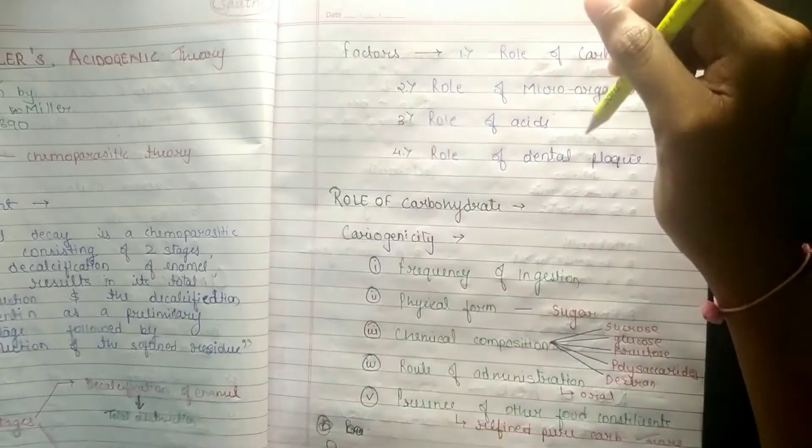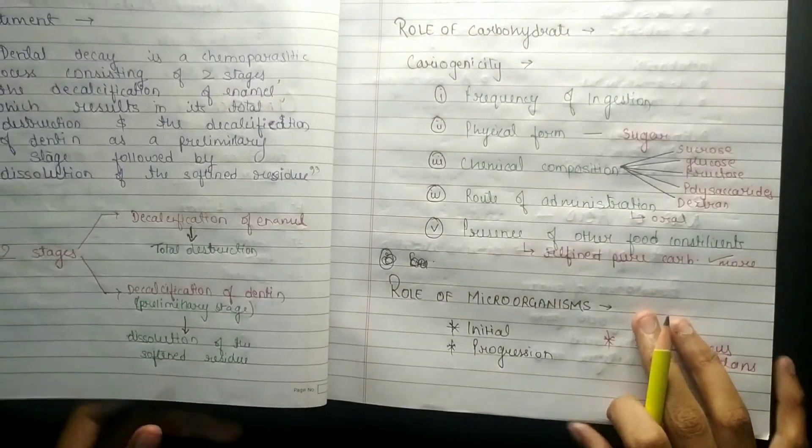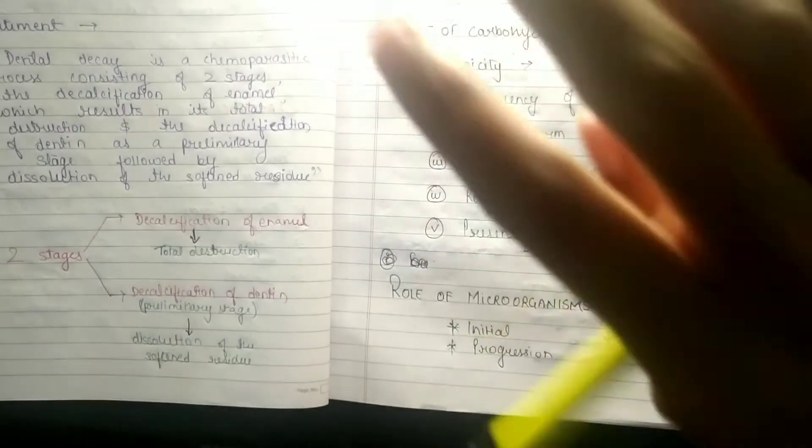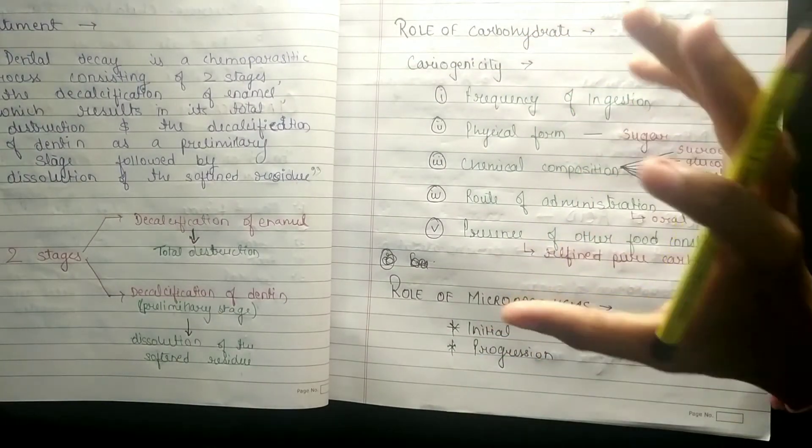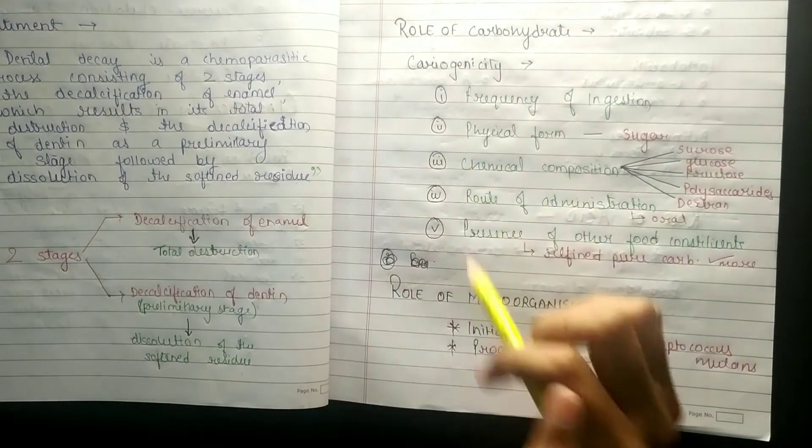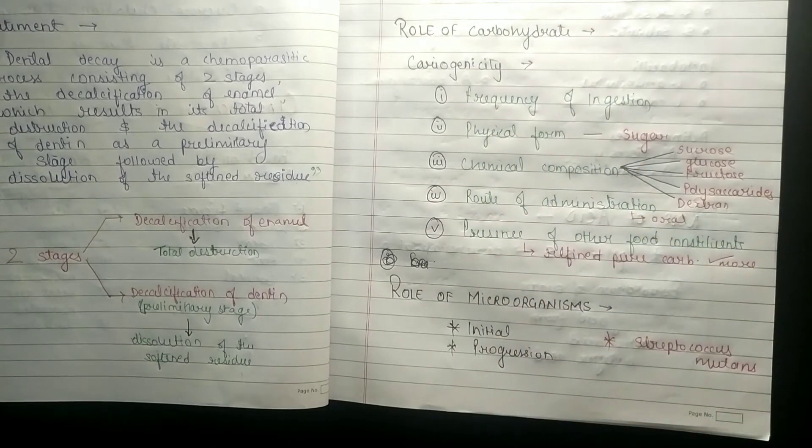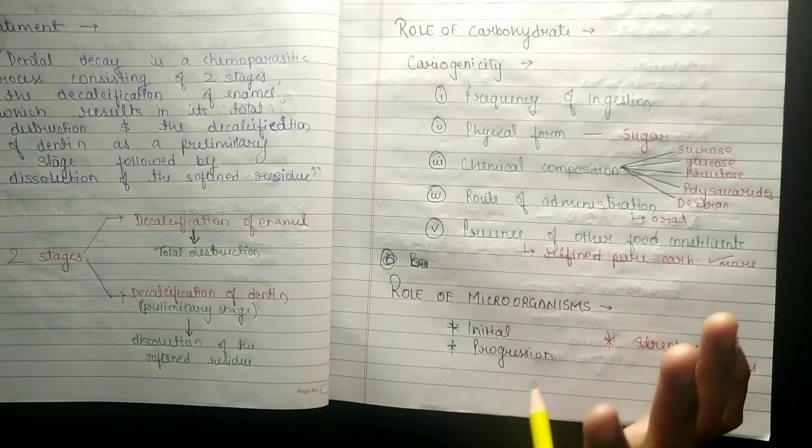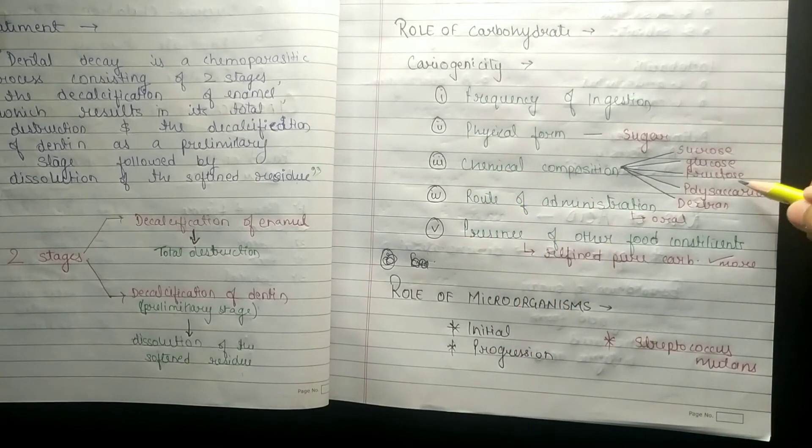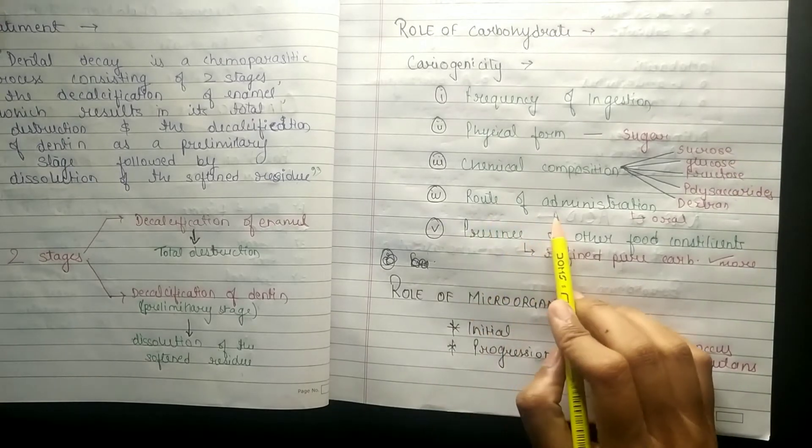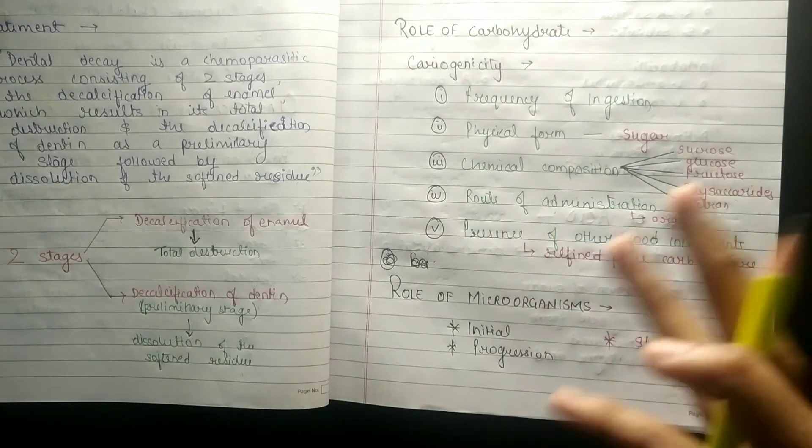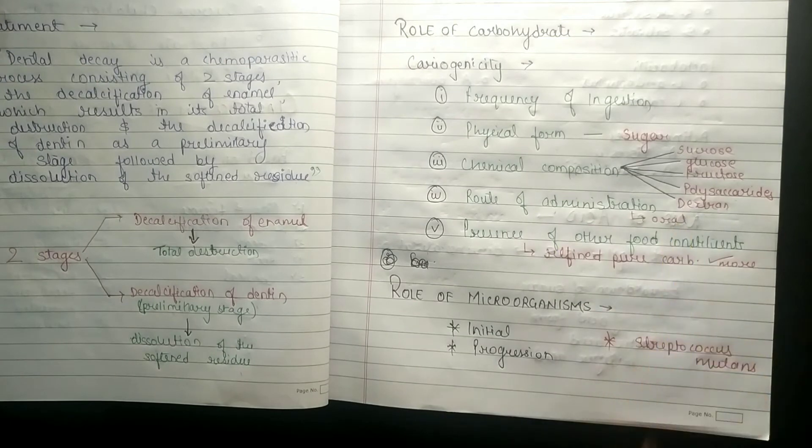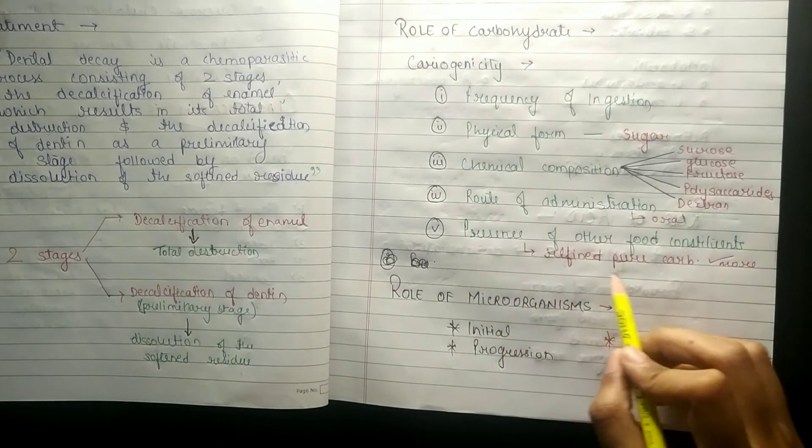It will become a dental plaque. So role of carbohydrate is simply if you are eating food it will be present, what can happen with this - its cariogenicity. Its five criteria: first frequency of ingestion, when you eat food how fast you are; physical form sugar; chemical composition - sucrose, glucose, fructose, polysaccharides, dextrin; route of administration - mainly dental route of administration would be oral; and presence of other food. So if it is pure refined carbohydrate, this can be the role of microorganisms.